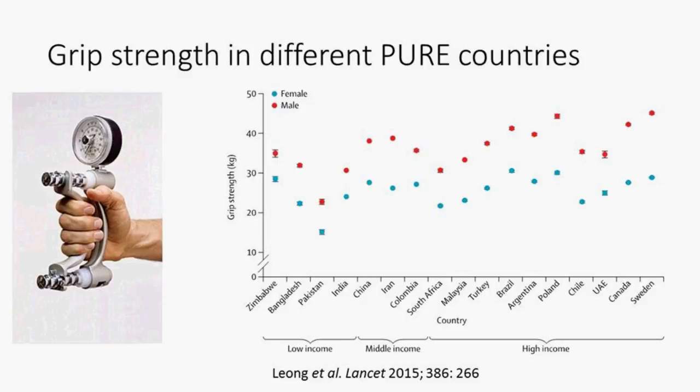Among measurements taken at baseline in PURE was grip strength, measured using a hand-grip dynamometer. Previous work showed that grip strength alone varied significantly between countries and sexes — it varies markedly between countries in low-income areas and higher-income countries like Canada and Sweden. This research piqued my interest in frailty as a phenomenon.